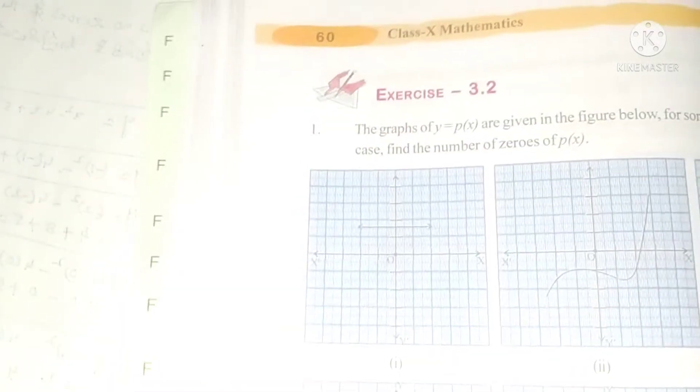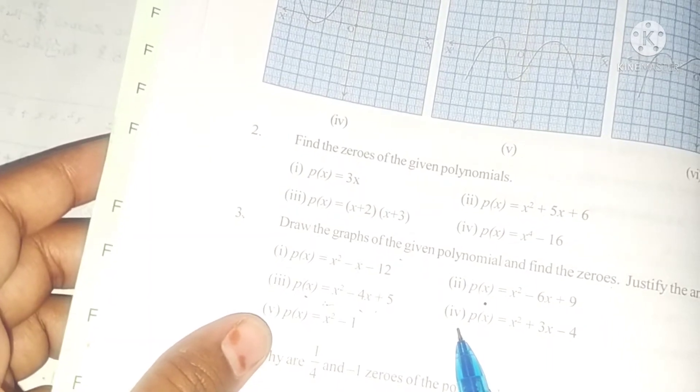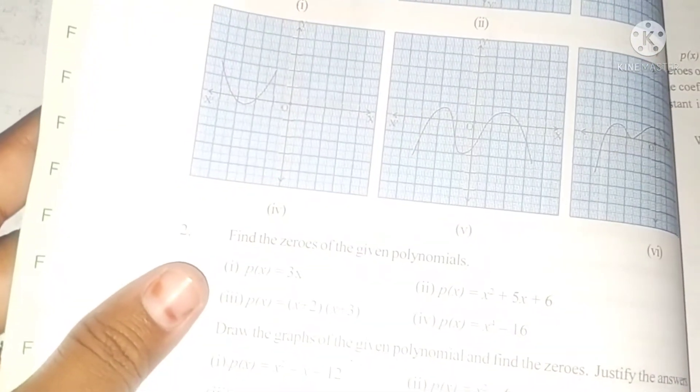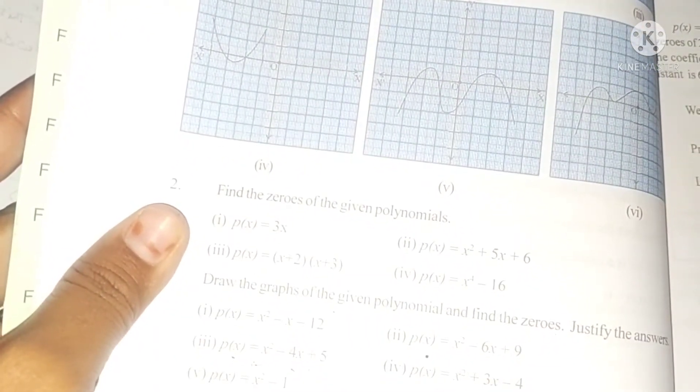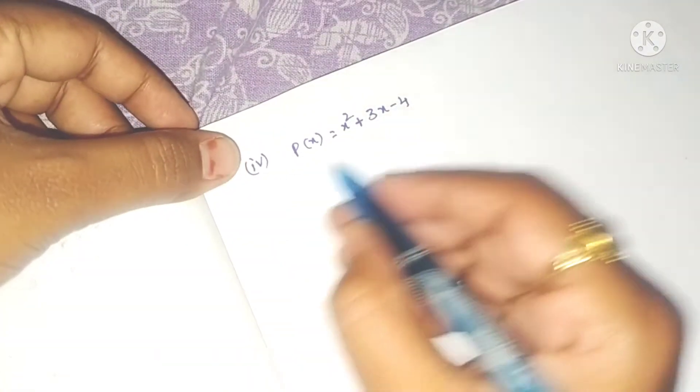Hello students, welcome to my channel. Today we are going to see in this video the graph of the fourth problem. In the third problem of exercise 3.2, we have to draw the graph p of x equals x square plus 3x minus 4.